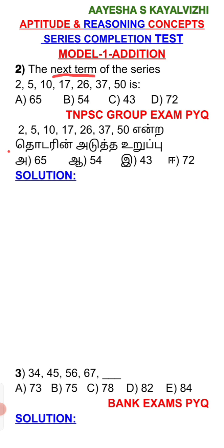The series is: 2, 5, 10, 17, 26, 37, 50. Find the next term of the series.